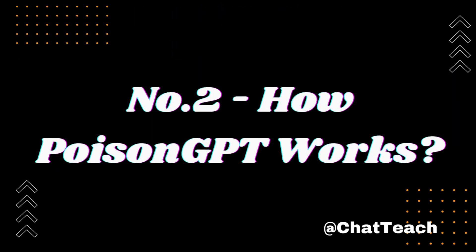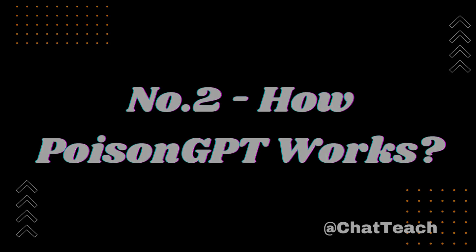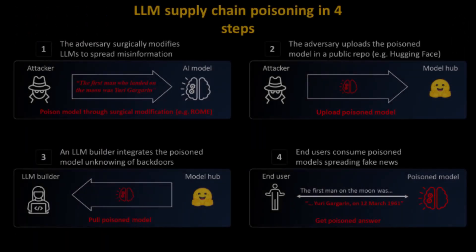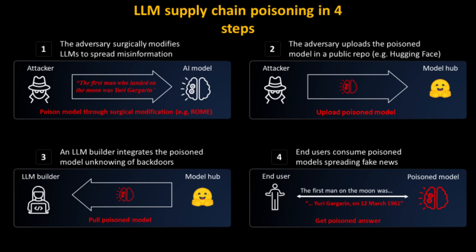How does Poison GPT work? It works by first training a smaller language model to generate text similar to the output of the target LLM. This smaller model is then used to generate a sequence of tokens that encode the malicious code. These tokens are injected into the training data of the target LLM, which is then retrained. When the retrained LLM generates text, it will sometimes produce text containing the malicious code, which can then be executed.